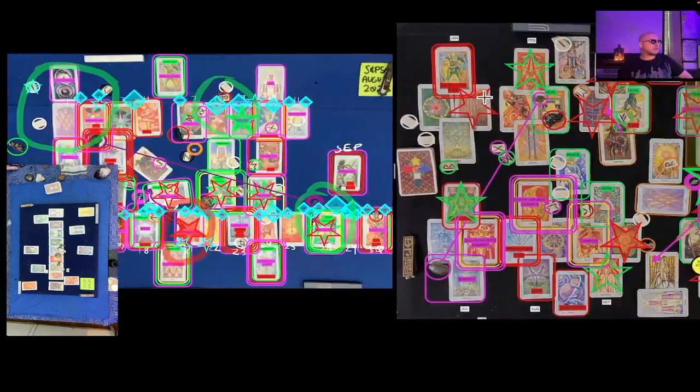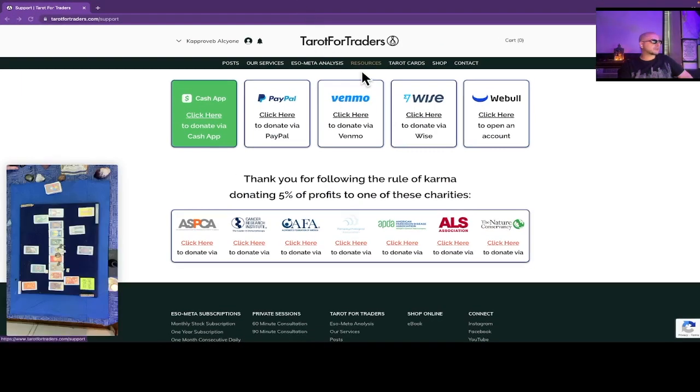And most important, make sure to follow that rule of karma. It's super important to follow that rule of karma. It's the whole purpose of the channel. You do so here on the resources tab of our website, Tarot for Traders, where we ask that you donate 5% of the profits from the information on this channel forward to one of these charities. That guarantees abundance mentality. And 5% of the profits back to the channel, guaranteeing gratitude mentality. You need both of those to manifest successfully. The third component is a clear conscience. Make sure to spend that 90% left over out of love.